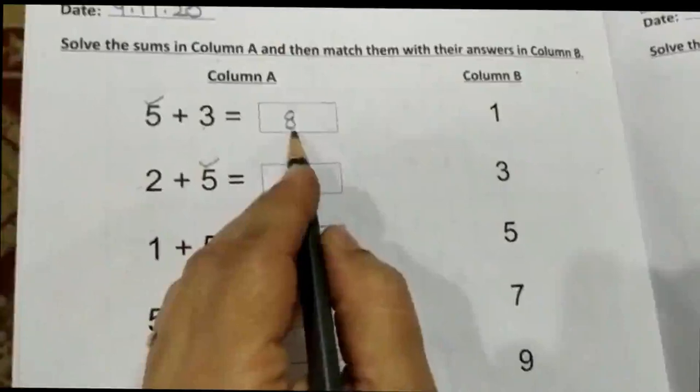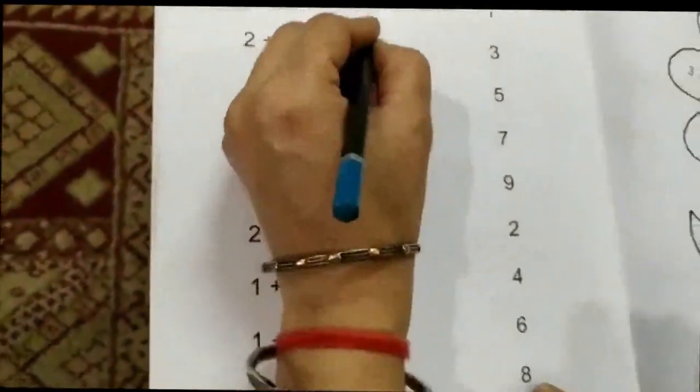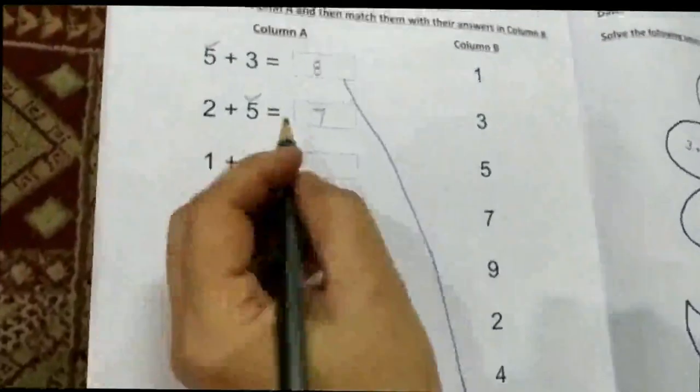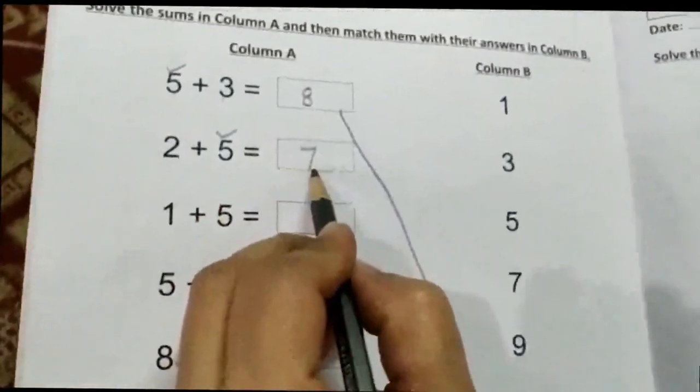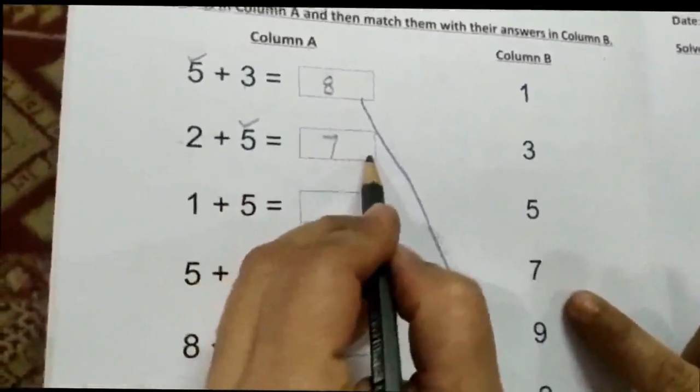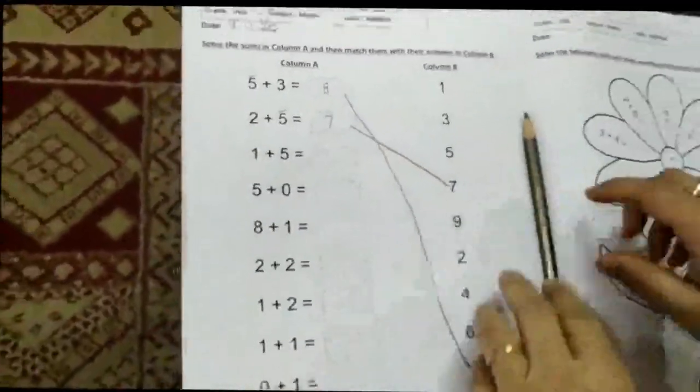Now match it with column B. Can you identify number 8? Here it is, so we join it to number 8. The next answer is 7. Number 7 is here, so we join it. That's how you will do these sums. I hope you enjoy. Have a good day.